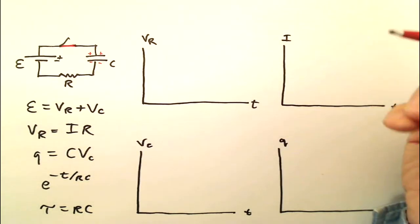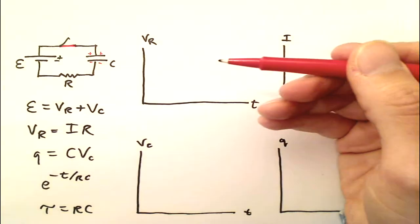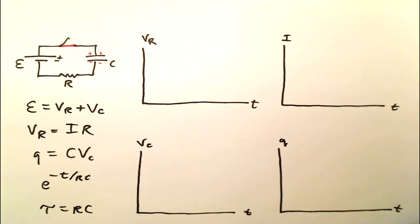Here we have four graphs. I'm going to draw a graph for each one of these quantities as a function of time, and then I'm going to write a formula for each one of these.